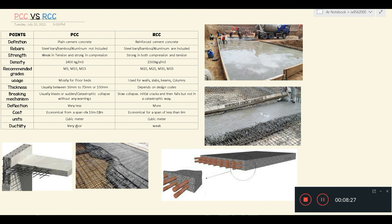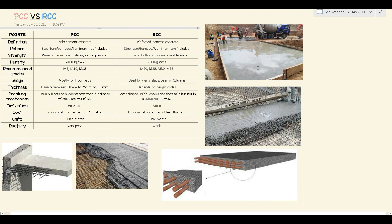As you can see, we have a few pictures. This is the floor bed, which is PCC — the initial bed. The second picture is RCC reinforced cement concrete, and the other pictures represent steel bars and concrete. This was our short topic: the main difference between PCC and RCC within construction sites. I hope you enjoyed the video and learned something from it. Thank you so much and stay tuned with us.